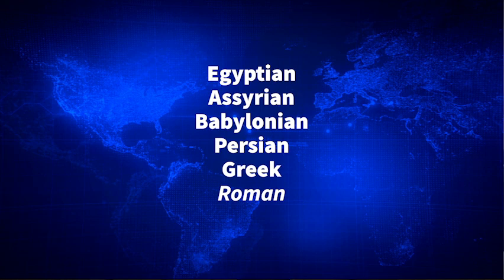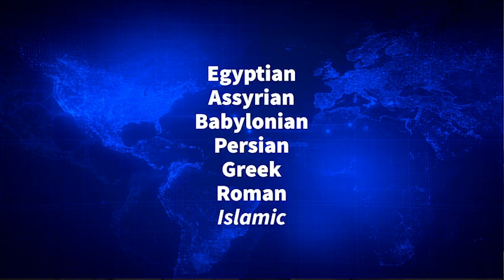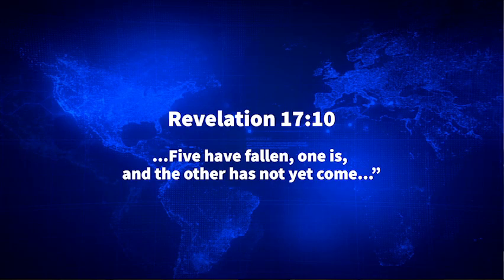The angel is conveying this to John. And then it says: 'And the other, the seventh head, has not yet come.' That was at the time John received the vision. History tells us that was the Islamic Empire, which swallowed up two-thirds of the Roman Empire. So five kingdoms had fallen, one was current, and one was yet to come.